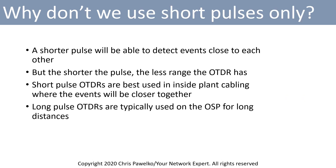So if short pulses are really good at seeing events close together, why don't we use short pulses all the time? Well, a short pulse will be able to detect events close to each other, but the shorter the pulse, the less range the OTDR has. Short pulse OTDRs are best used in inside plant cabling where events will be closer together — for example, a fiber connection where you go from one patch panel to another. Whereas long pulse OTDRs are typically used on the outside plant for long distances.